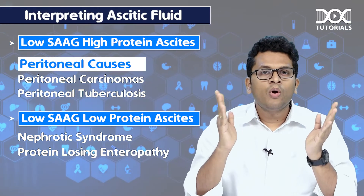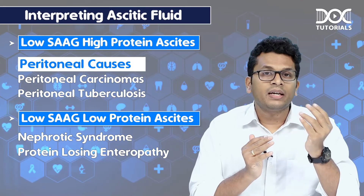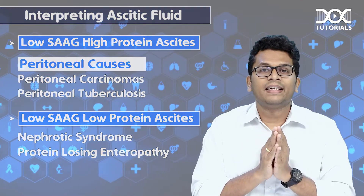Now we know the four combinations or different types of ascites based on SAAG and proteins, and at least two causes for each of them. For more such updates, stay tuned to the social media of Doc Tutorials. Thank you.